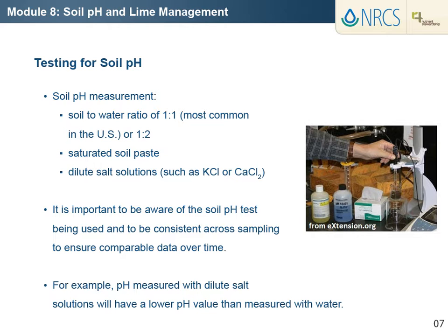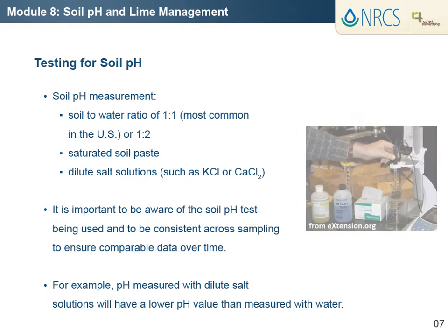Also, differing soil-water ratios produce slightly different pH values. A reading obtained from a 1 to 1 soil-to-water ratio is generally 0.15 to 0.25 pH units higher than that of a saturated paste extract, but lower than a 1 to 2 ratio. Therefore, it is important to be aware of the soil pH test being used and to be consistent with sample analyses to ensure comparable data over time. Soil testing laboratories typically denote the pH test method used on their soil test reports.